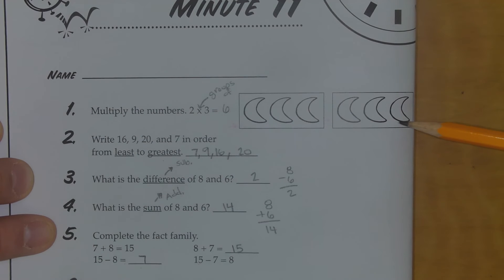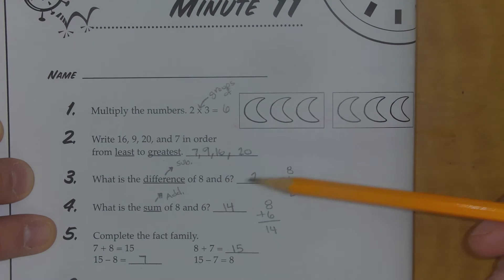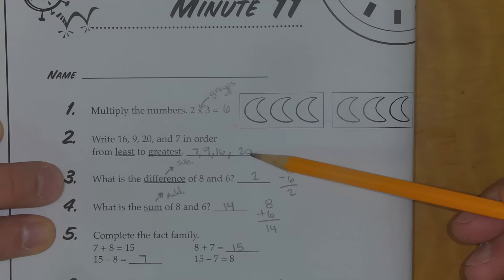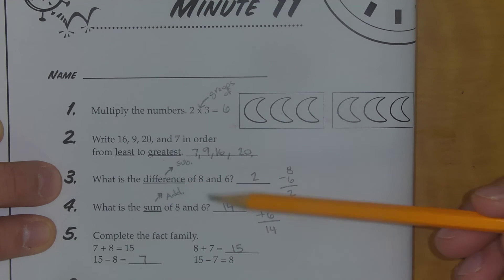Number 2: the order should be 7, 9, 16, and 20. Number 3: what's the difference between 8 and 6? 8 minus 6 is 2, so I put my 2 there.